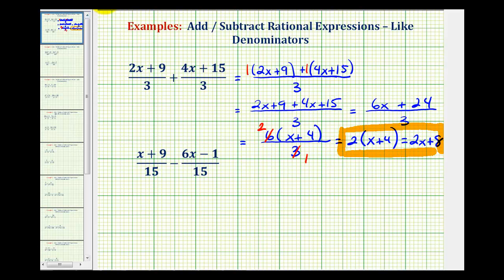Let's take a look at our second example. Again, we have a common denominator, so we can go ahead and subtract. So our denominator is going to stay fifteen. And then we're going to have the quantity x plus nine, minus the quantity six x minus one.